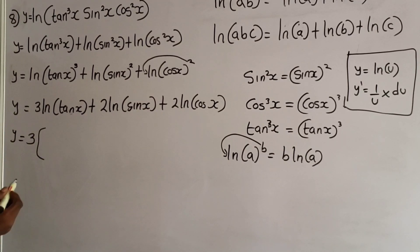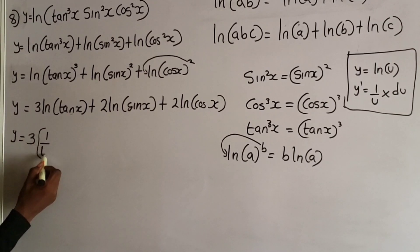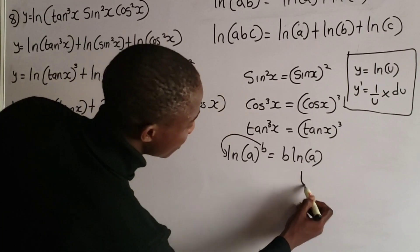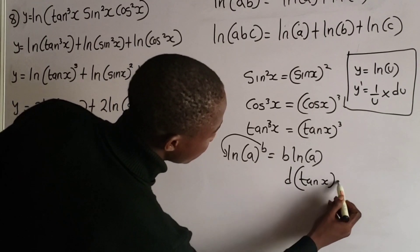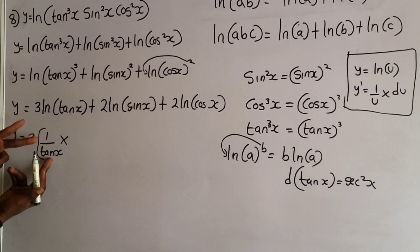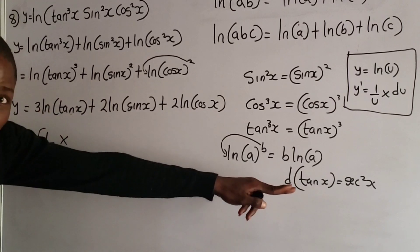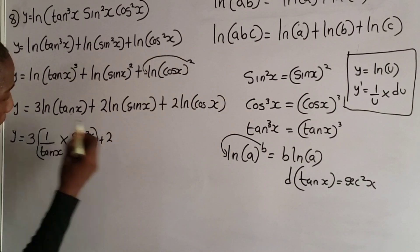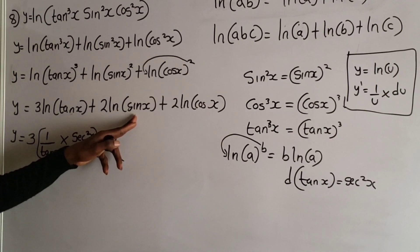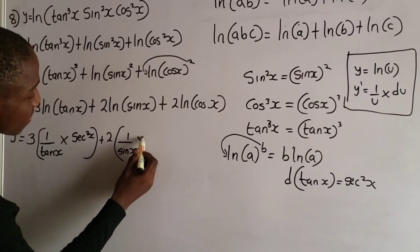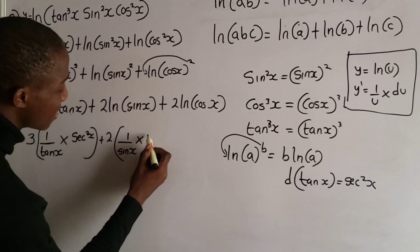Using this approach, to differentiate 3 ln(tan x), I take the inverse of tan x, giving 1 over tan x, then multiply by the derivative of tan x, which is sec²x. For the term 2 ln(sin x), I take 1 over sin x and multiply by the derivative of sin x, which is cos x.